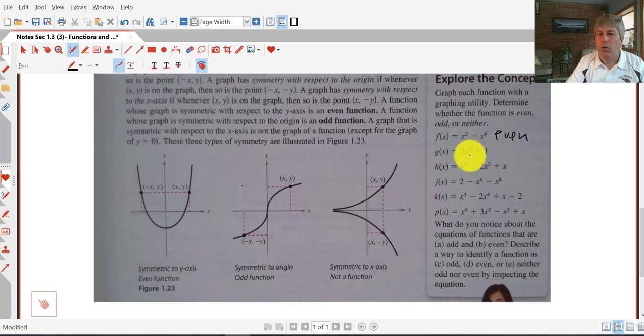2x cubed plus 1, it has an odd exponent, but this one actually is going to be neither. Okay, and we can do that if you want to check, you know, like f of negative 2 does not equal the opposite of f of 2 here. So that one's going to be neither.